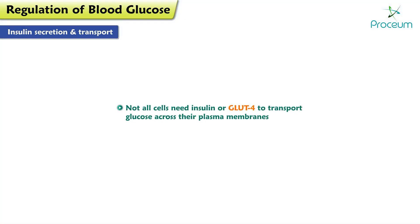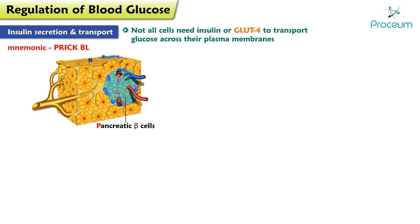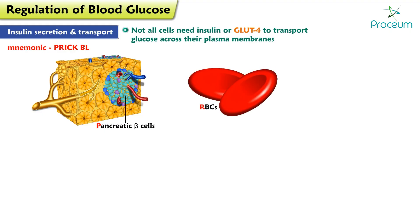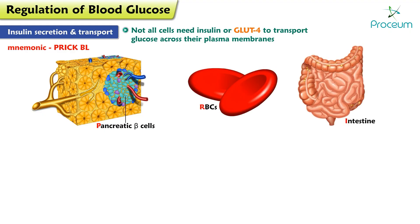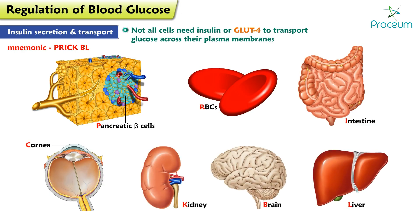Not all cells need insulin or GLUT4 to transport glucose across their plasma membranes. To remember which cells and tissues do not need insulin or GLUT4, use the mnemonic PRIC-BL. It stands for pancreatic beta cells, RBCs, the intestine, the cornea, the kidney, the brain, and the liver.